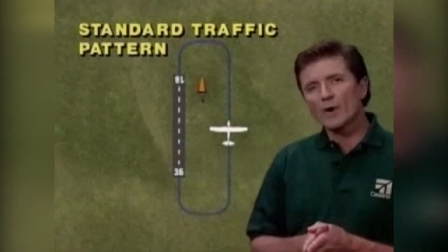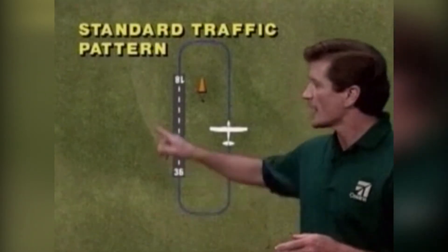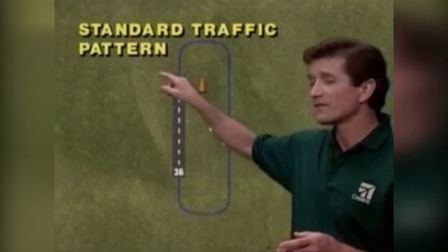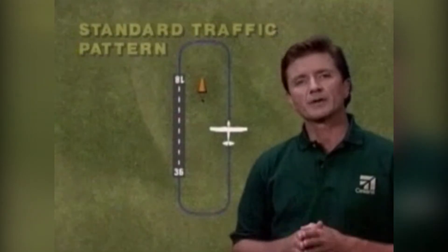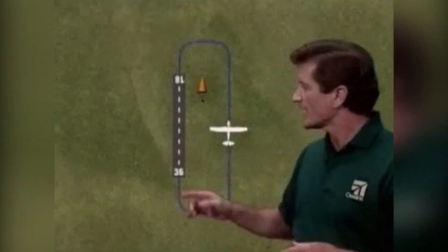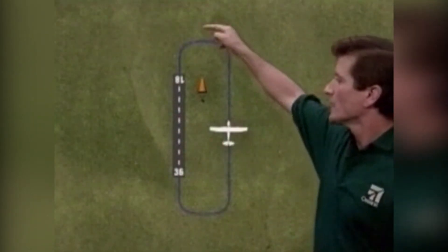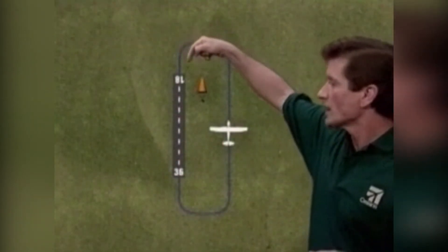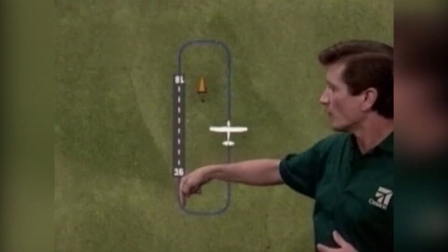To get lined up with the runway when approaching an airport, you normally fly a standard traffic pattern. Think of the traffic pattern as a rectangle over the ground with one of the long legs aligned with the active runway.